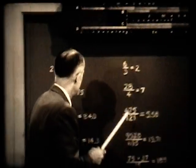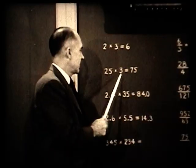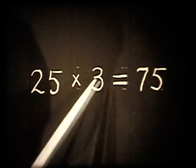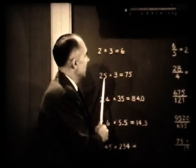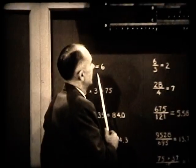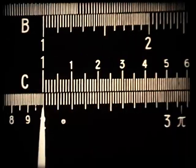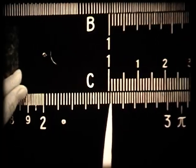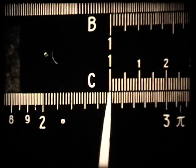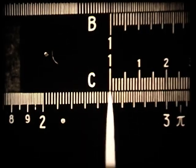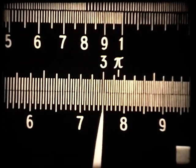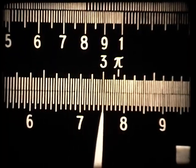Now let's take a slightly harder product: 25 times 3, which gives 75. Our first number is 25, so we come up to the D scale — 20 here and 30 there, with 25 in between. We put the index C right on the 25, then multiply by 3 by going along the scale to 3, and come down to find 75.